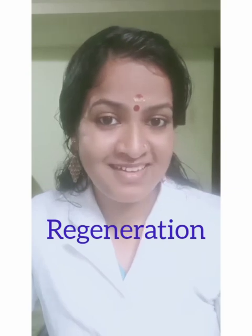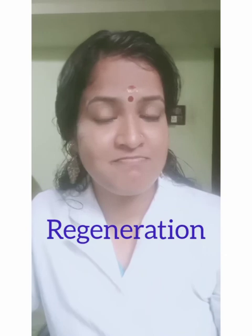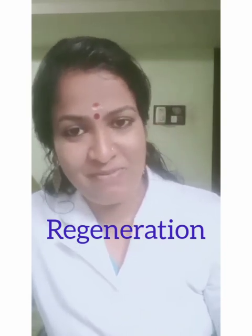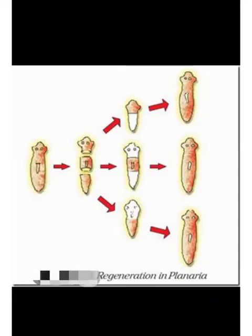The third type is regeneration. Many fully differentiated organisms have the ability to give rise to new individual organisms from their body parts. Simple animals like hydra and planaria show this type of reproduction. Planaria is a flatworm. If we cut it into three pieces — head piece, middle piece, and tail piece — each piece can regenerate its lost parts and grows into a complete organism. Regeneration is carried out by specialized cells. These cells proliferate and make large numbers of cells, and from this mass of cells, different cells undergo changes to become various cell types and tissues.